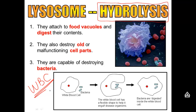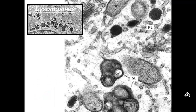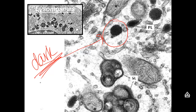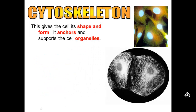Lysosomes also destroy old or malfunctioning cell parts. And white blood cells have many lysosomes inside them because they can kill the bacteria that the white blood cells eat. Here's an example of what a lysosome looks like in an electron micrograph. You'll notice it looks just like a vesicle but with much darker insides — those dark insides show the hydrolytic enzymes that are inside the lysosome.